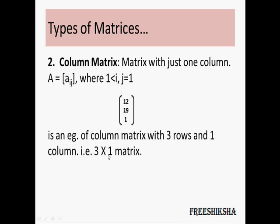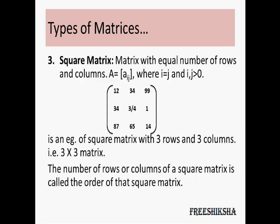Similarly, you have a column matrix where you have 1 column and a different number of rows. It could be 3 rows or 4 rows — the matrix will be called a 3×1 matrix or a 4×1 matrix.